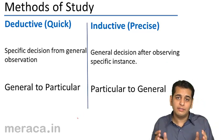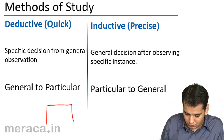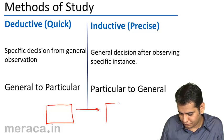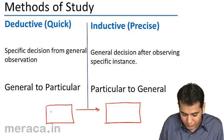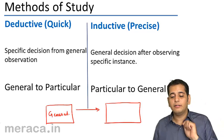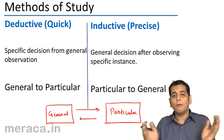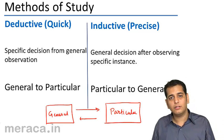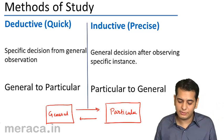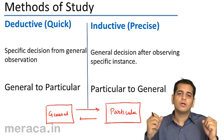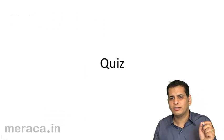Please bear in mind that these two methods are complementary to each other — they complete each other. In the deductive method you go from general to particular, and in the inductive method you go from particular to general, making it a two-way process. Both are complementary to each other. This completes our explanation on the methods of study. Let's have a quick quiz on this.